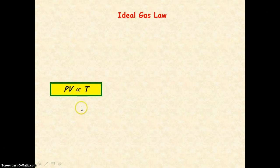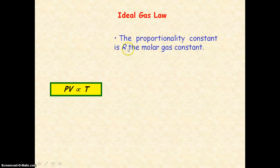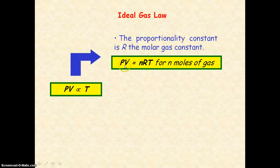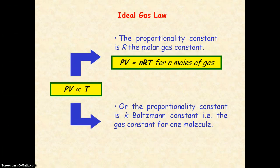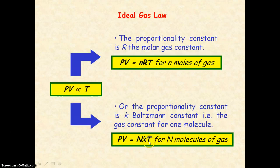To get the ideal gas equation, we need to introduce a proportionality constant. If we're looking at moles of gas, the proportionality constant is R, which is the molar gas constant, giving us PV = nRT, where little n represents the number of moles. If instead we're looking at the number of molecules in the gas, the proportionality constant is K, which is Boltzmann's constant — representing the gas constant for one molecule — and the equation becomes PV = NKT, where capital N is the number of molecules.